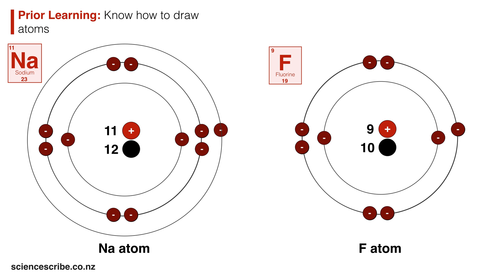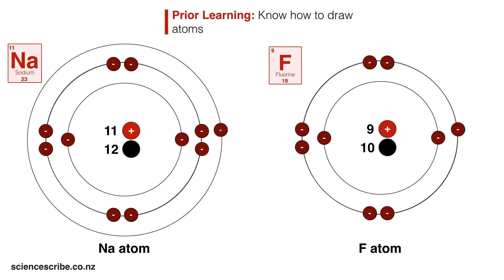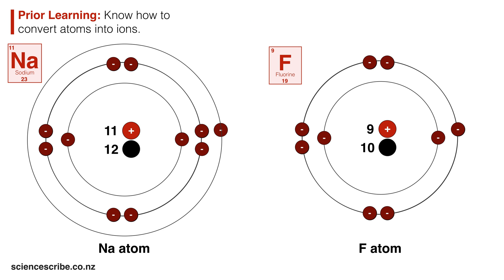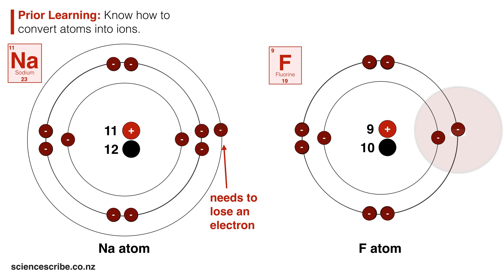The second skill you should be okay with is knowing how to convert atoms into ions. If I had the sodium atom, you can see that there's just one electron on the outermost energy level, so you should be able to predict that it's going to need to lose that electron. In the case of the fluorine atom, you should see straight away that it has seven out of the eight maximum electrons in the outermost energy level, so it just needs to gain one more.